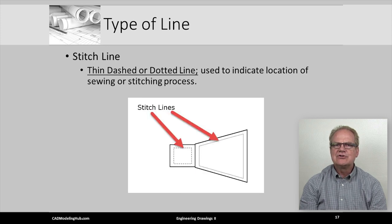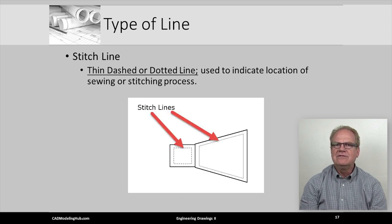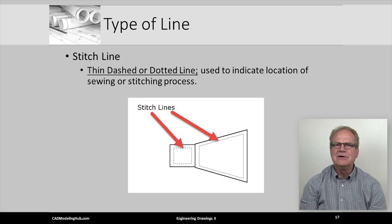Stitch or sewing lines are used to indicate the size and location where top stitching of fabric is done. There are two different patterns that are allowed in the ASME or ISO standard. Either a thin dashed line or dots to illustrate as illustrated here.